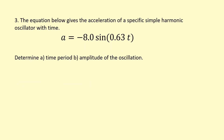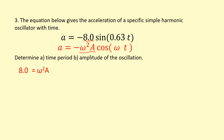Given an equation for acceleration of a specific simple harmonic oscillator with time, we determine the time period and amplitude. The general acceleration equation is a = -ω²A cos(ωt) or sine variant. By comparing coefficients: the coefficient multiplying t is ω = 0.63 rad/s, so T = 2π/ω = 10 s. The coefficient at the front is ω²A = 8, so rearranging gives amplitude A = 8 / (0.63²) = 2 m.